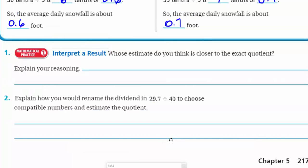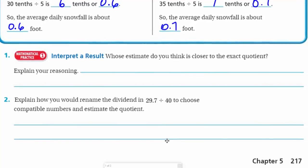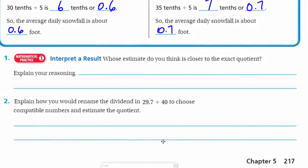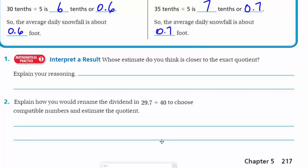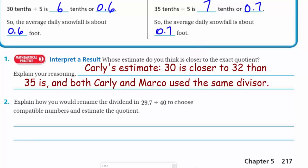It says we have to interpret the result: whose estimate do you think is closer to the exact quotient? That's a great question because they're both pretty reasonable estimates. They found compatible numbers, but 30 and 35 are definitely two different estimated dividends. I would probably say it's Carly's estimate. Her estimate of 30 is closer to 32 than 35 is. Both Carly and Marco did use the same divisor, but I think because Carly's estimated dividend of 30 tenths is closer to 32, I would say that her answer is a little bit more reasonable.